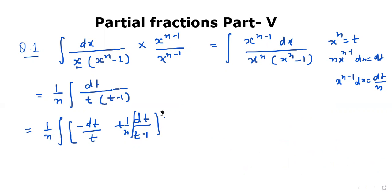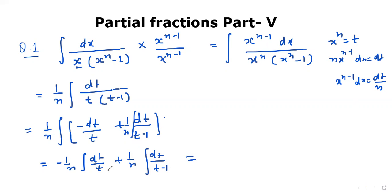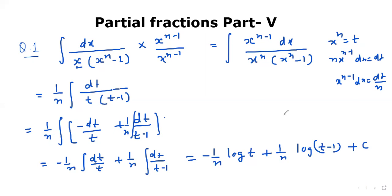It will become minus 1 upon n times the integration of dt upon t, plus 1 upon n times the integration of dt upon t minus 1. Since the integration of dx upon x is log x, it becomes minus 1 upon n log t plus 1 upon n log t minus 1 plus c. Now substituting t equals x power n, the answer is minus 1 upon n log x power n plus 1 upon n log x power n minus 1 plus c.